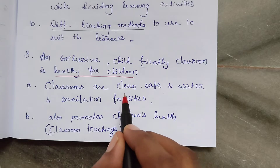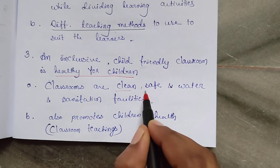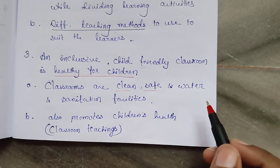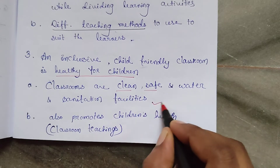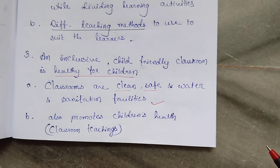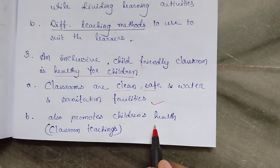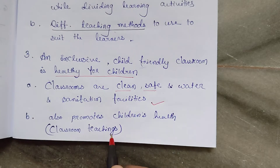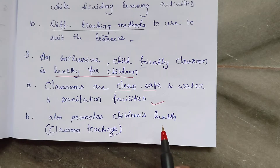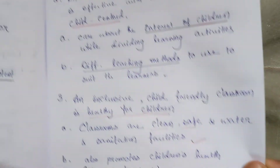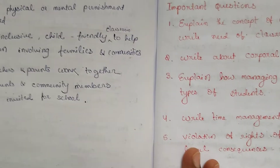The third characteristic: an inclusive child-friendly classroom is healthy for children. Classrooms should be clean, and safe water and sanitation facilities should be available. It also promotes children's health — the teacher teaches good manners: how to eat, how to sleep, everything related to healthy habits.